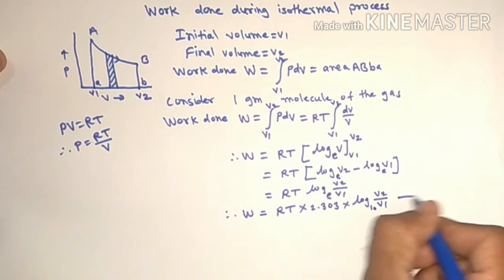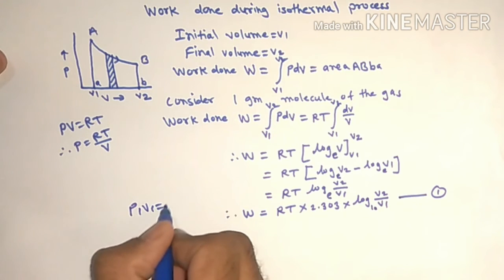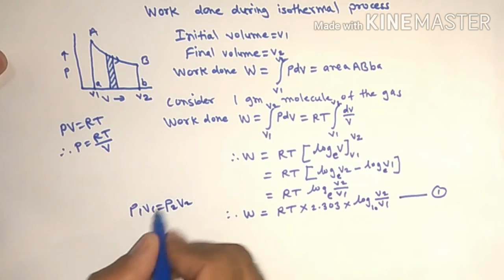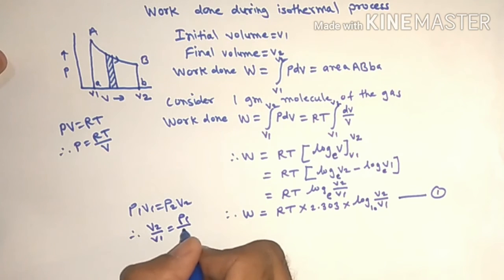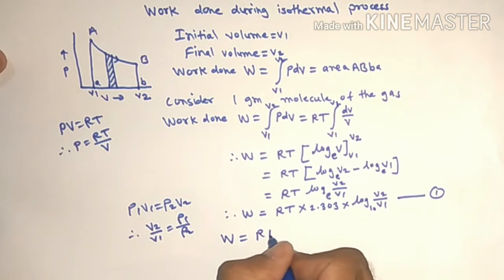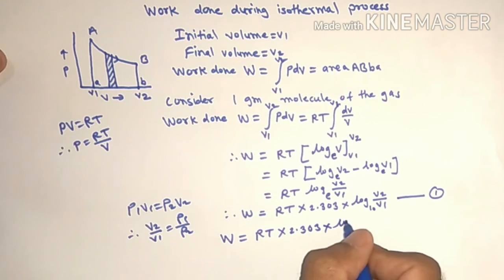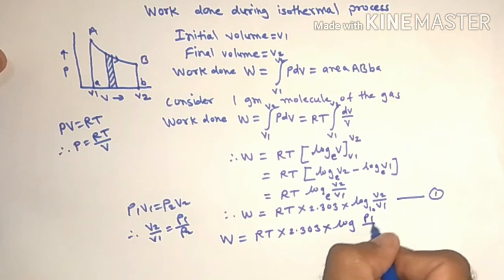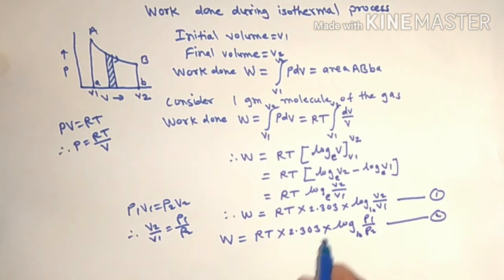Now we know P1V1 is P2V2, therefore from this we can write V2 upon V1 is equal to P1 upon P2. Using this in equation first, we write work done is equal to RT into 2.303 into log P1 upon P2 to the base 10, equation second.